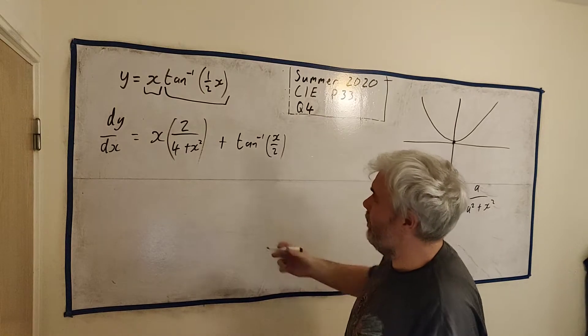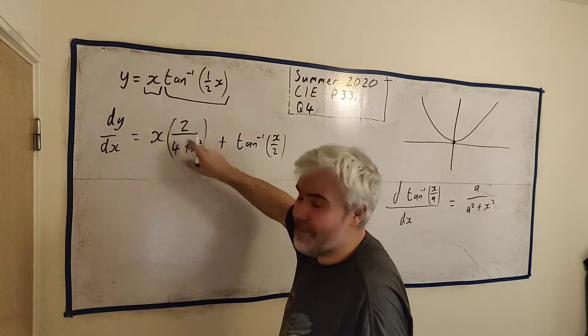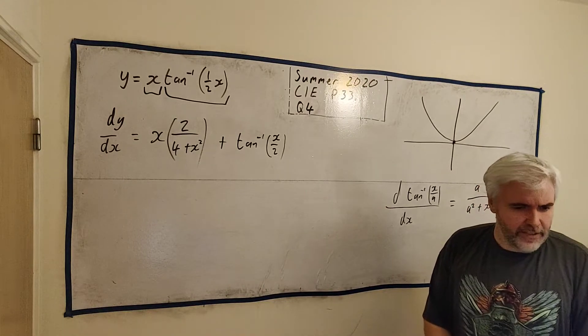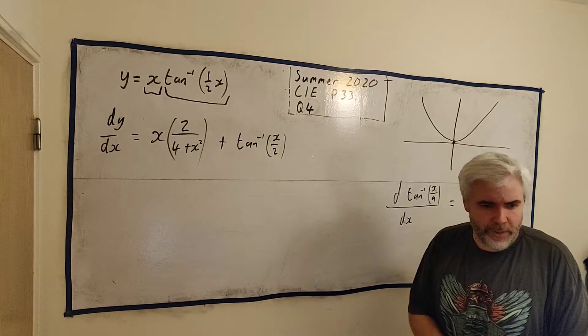And I guess that's it for part A. That's dy/dx. I guess you could clean this up, put the x in there. No examiner is going to take a mark off for that. I think I'll leave it as that and we'll go on to part B.